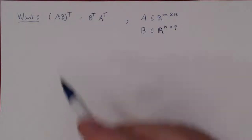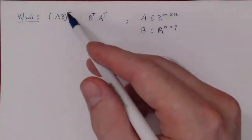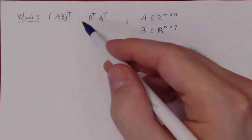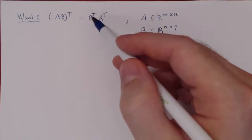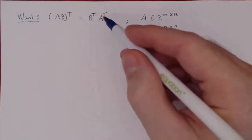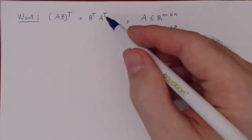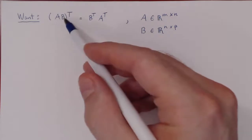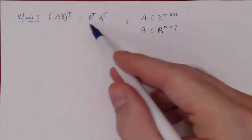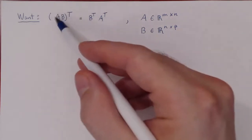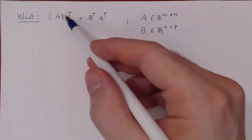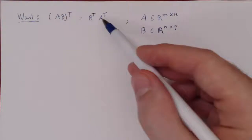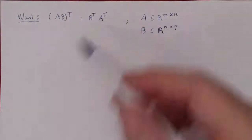Here's the problem. The claim is: the transpose of AB is equal to the transpose of B times the transpose of A. You have to be careful — you can transpose over a product, so you transpose each matrix individually, A and B, but you have to swap the order of the product.